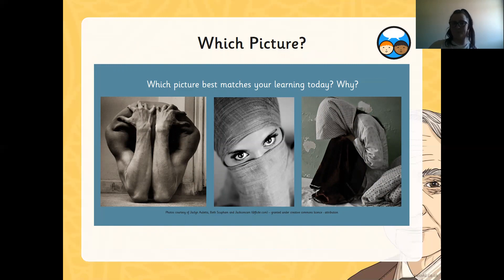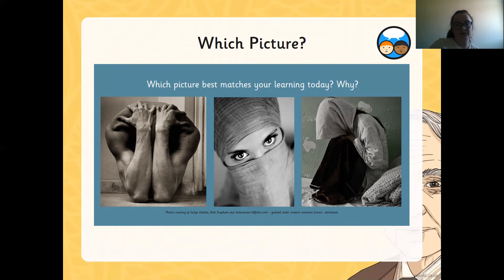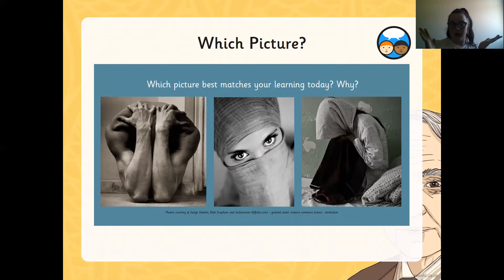Which picture best describes your learning today and why? This is your own opinion and there's no right or wrong answer. Looking at these three images, which one do you think best matches your learning today on how the body or the sculptures might be positioned? It looks like there's a man with his hands over his head, a lady — though this is a headshot and we weren't really focusing on heads today — and then a child that's kind of scrunched up. Which one matches your learning today and why? You can write this down and describe picture A, B, or C, which matches your learning today. Once you've done that, carry on watching the video.